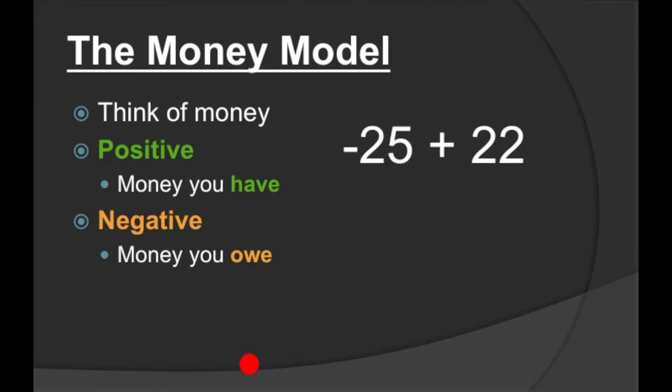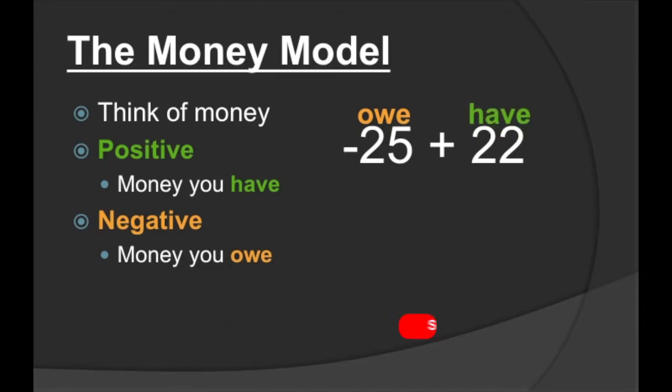How about negative 25 plus 22? We owe 25, and we have 22. We owe more than we have, so even after we pay back with what we have, we're still going to have money that we owe. If we owe 25 and pay back 22 of it, we're still going to owe $3. So our answer is negative 3.